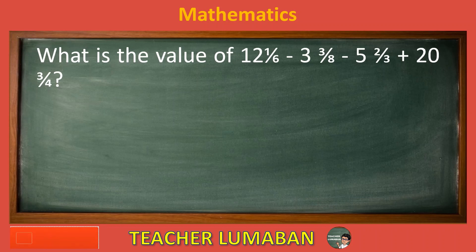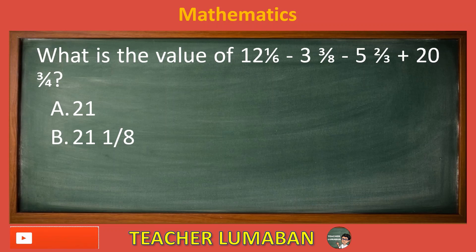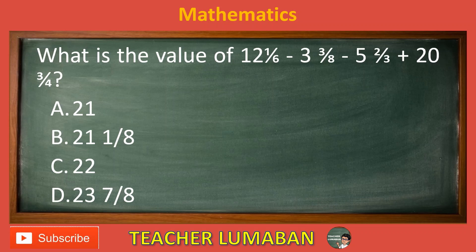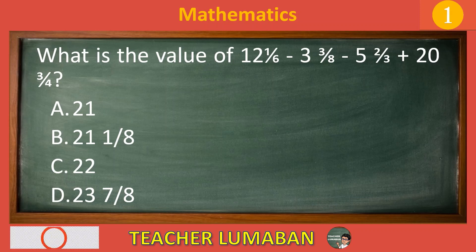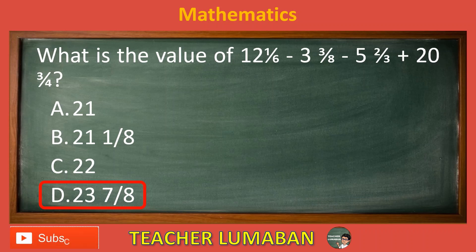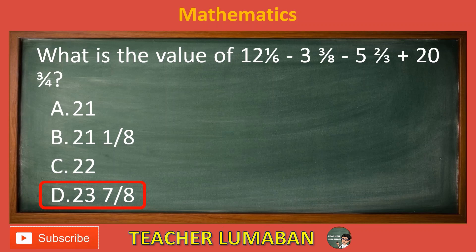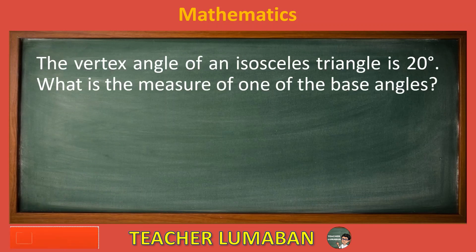What is the value of 12 and 1/6 minus 3 and 3/8 minus 5 and 2/3 plus 20 and 3/4? Letter A: 21. Letter B: 21 and 1/8. Letter C: 22. Letter D: 23 and 7/8. The correct answer is letter D, 23 and 7/8.